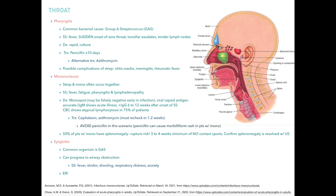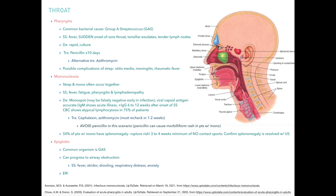On to throat. First up: pharyngitis. The most common bacterial cause is group A strep. Symptoms include fever, sudden onset of sore throat, tonsillar exudates, and tender lymph nodes. Diagnosis is made by rapid strep test or culture. First-line treatment is penicillin for 10 days — pen times 10 for pharyngitis. An alternative is azithromycin. Complications of strep include otitis media, meningitis, and rheumatic fever, which is why treating these patients promptly is so important.